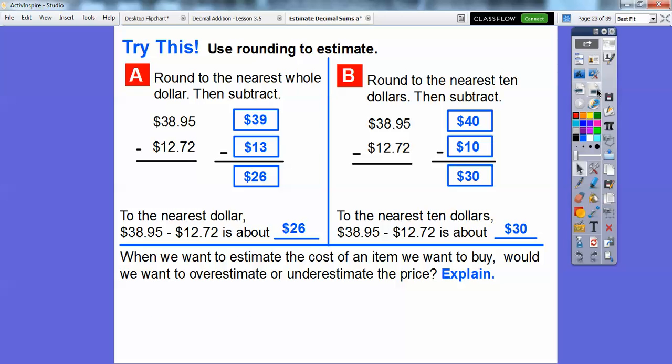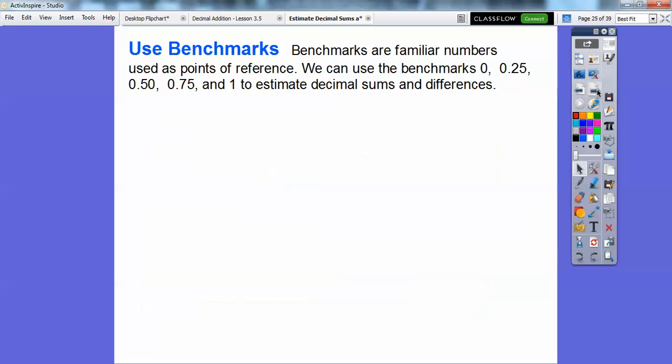I would think it would be better if we would overestimate the price because we want to make sure that we have enough money at the end. Whatever the price is, let's say it's $39.95, I'm going to say it's $40 and make sure I have $40 to cover the price.